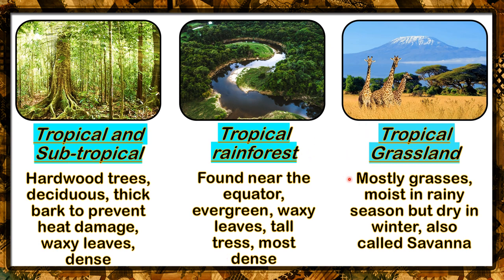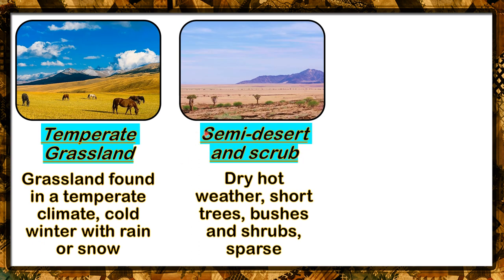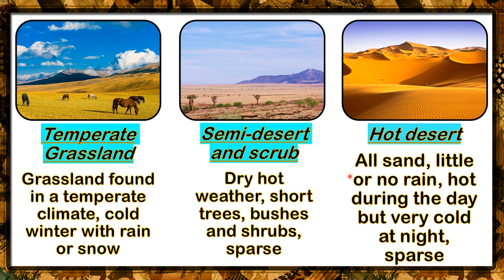Tropical grassland — mostly grasses, moist in the rainy season but dry in winter, also called savanna. Giraffes are an example of animals that live in the savanna. Next, temperate grassland — grassland found in a temperate climate, cold winter with rain or snow. Semi-desert and scrub — dry hot weather, short trees, bushes, and shrubs, sparse. Hot desert — all sand, little or no rain, hot during the day but very cold at night.